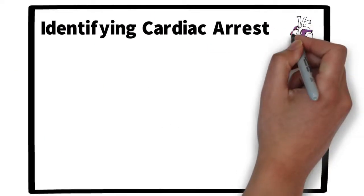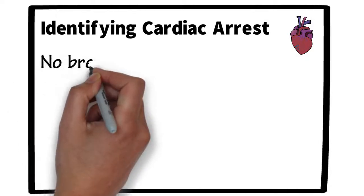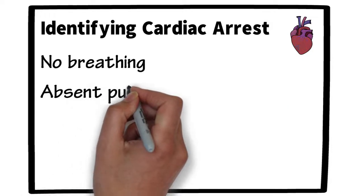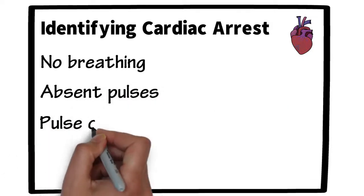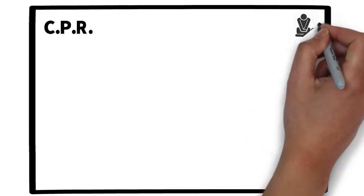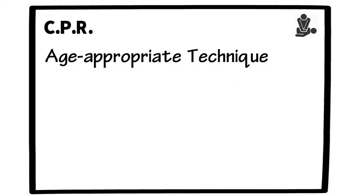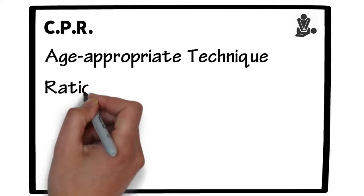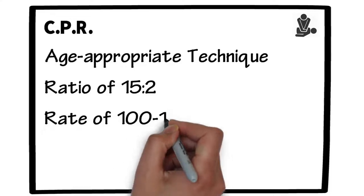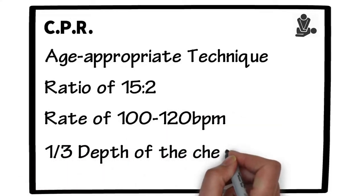It's at this point that we're probably going to identify cardiac arrest if it exists, and that will mean there's no breathing, and absent pulses or a pulse of less than 60 beats per minute in the pediatric algorithm. We'll then start CPR, using an appropriate technique dependent on the patient's age, with a ratio of 15 compressions to two effective ventilations, a rate of 100 to 120 per minute, and a third of the depth of the chest.